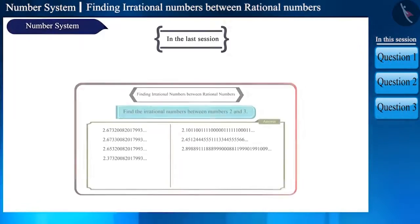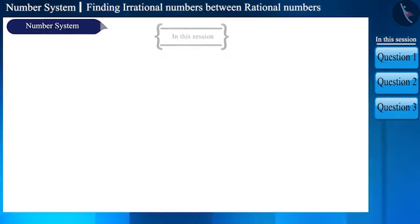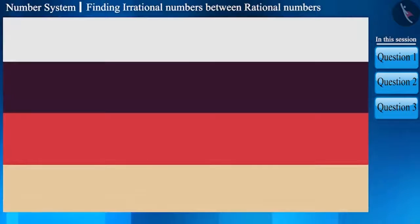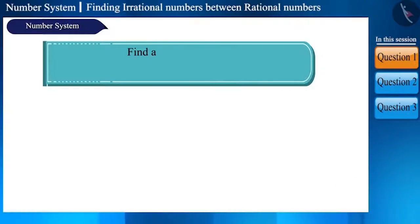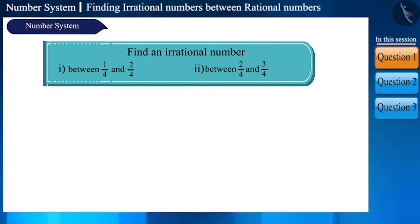In the previous video, we learnt to find irrational numbers between two rational numbers. In this video, we will solve some more questions related to this topic. Let's take the first question: find one irrational number between the rational numbers 1 by 4, 2 by 4, and 3 by 4.